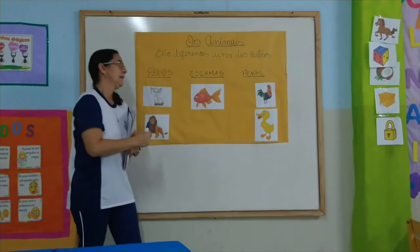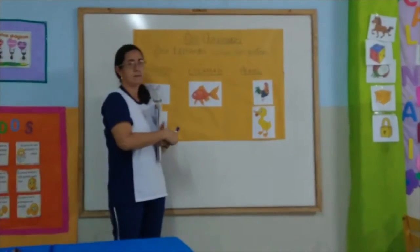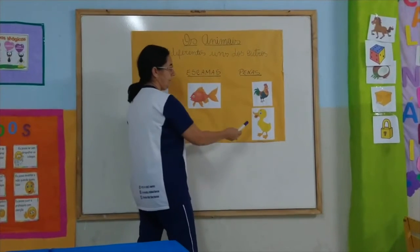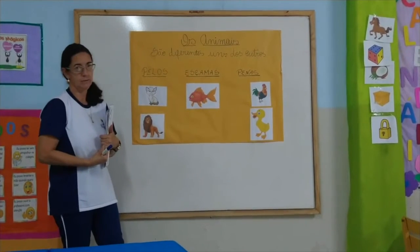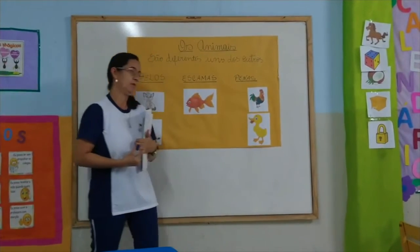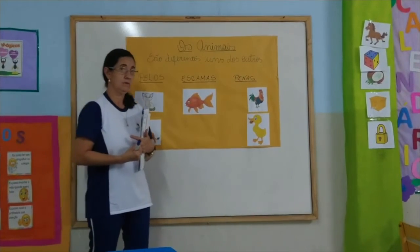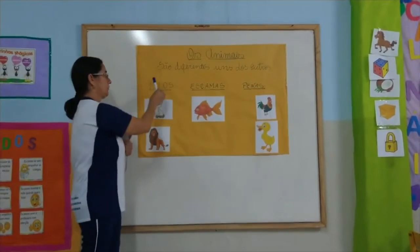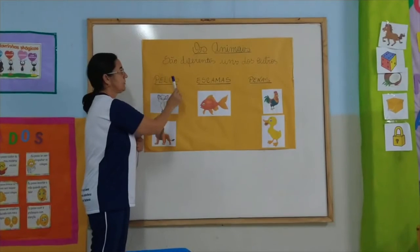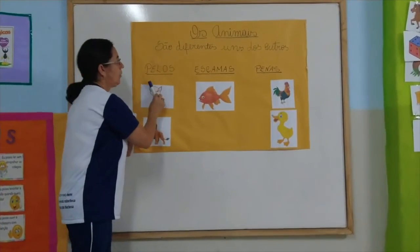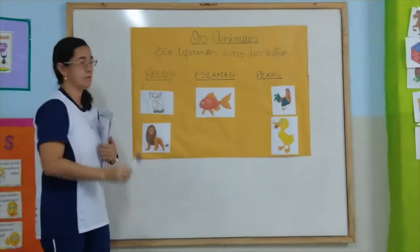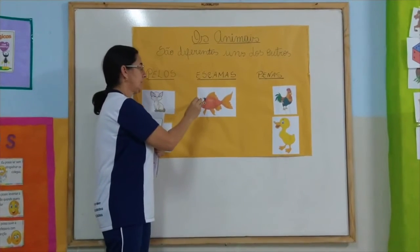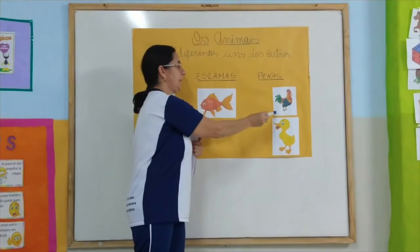Now we're going to talk about the characteristic of animals that have feathers. There are many! Sandra placed the rooster, the duck — but there's also the bird, the chicken, the peacock, and many other animals that have feathers. So today we studied that animals are different from each other because they have these characteristics: the body covered in fur, the body covered in scales, and the body covered in feathers.